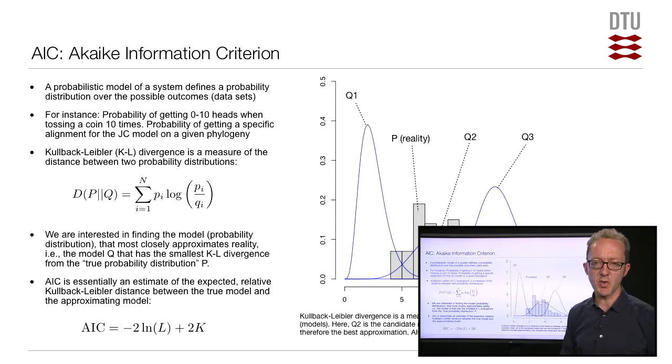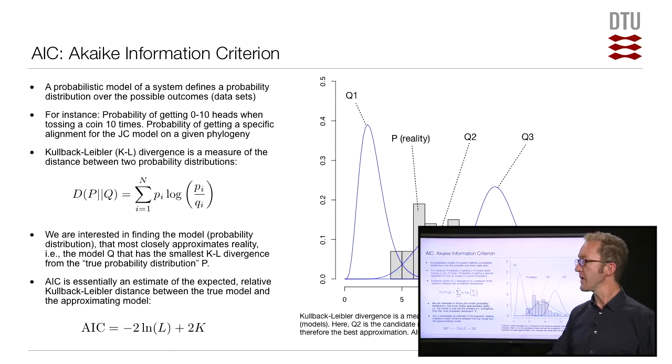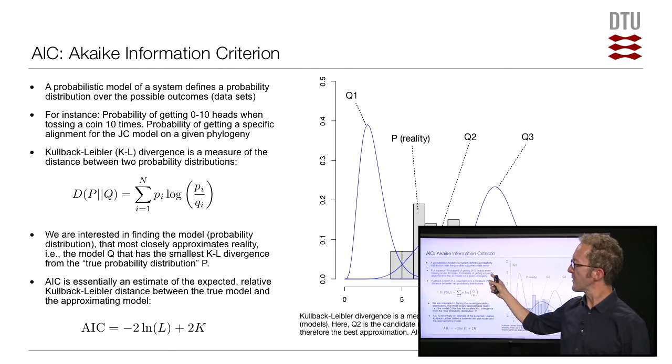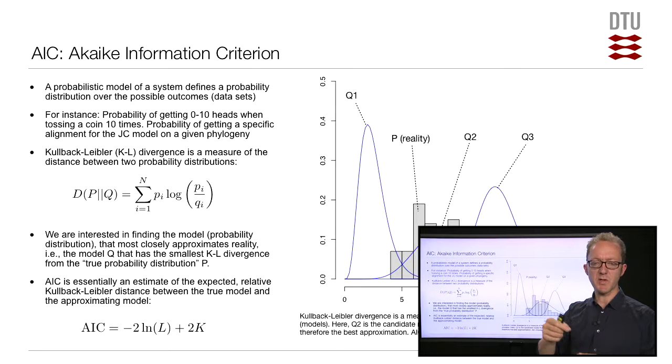In the case of tossing a coin ten times, if you have a probabilistic model of that, then for a given set of parameters you should be able to compute the probability of getting zero hits, one hit, two, up to ten hits if you've tossed it ten times.